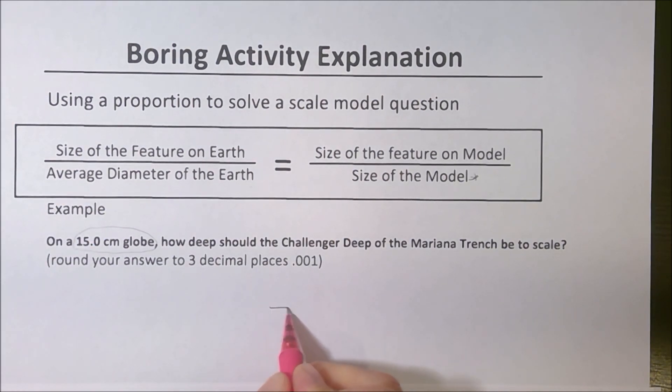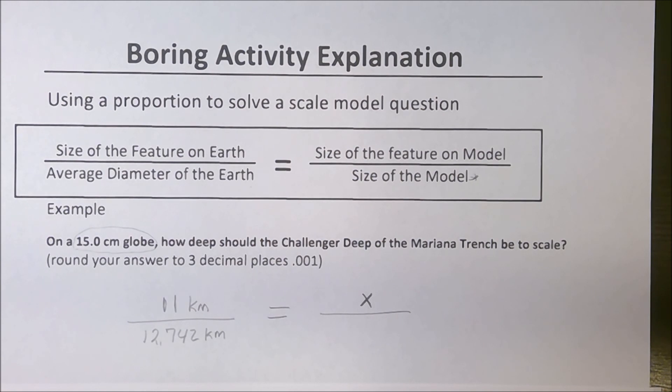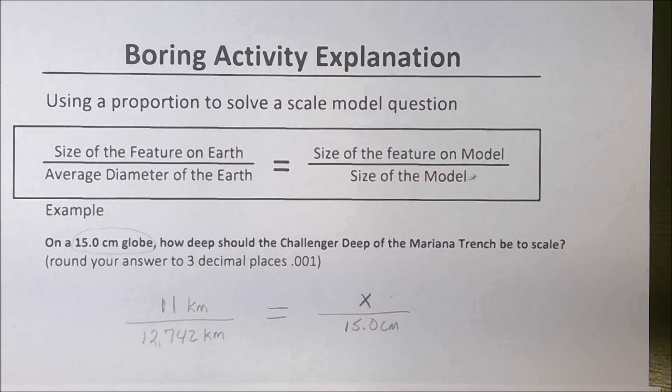When you're doing this, it's the feature to the whole is equal to the feature to the whole. So the Mariana Trench we just saw was 11 kilometers, and we have 12,742 kilometers as the average diameter I found. Our unknown is going to be the depth of the Mariana Trench on our globe, and the size of our model is supposed to be 15.0 centimeters. You'll see I have kilometers on both sides here, centimeters is here, so when we solve this, this should be x in centimeters.